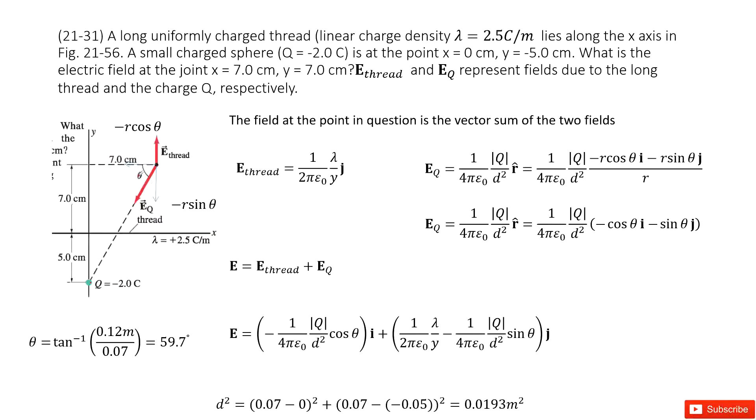This picture gives you a hint. The electric field from the thread points upward, and as we learned, the electric field for this particle charge is radially inward, pointing toward the particle. We can call this angle theta. The electric field at this position is the vector sum of these two electric fields.